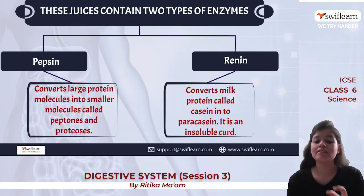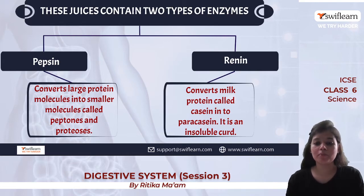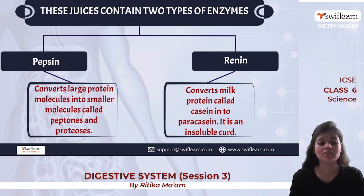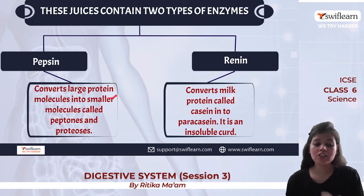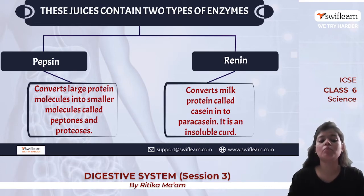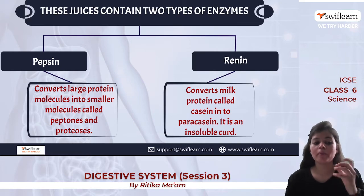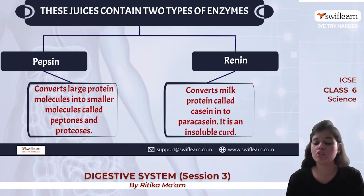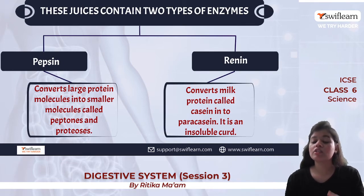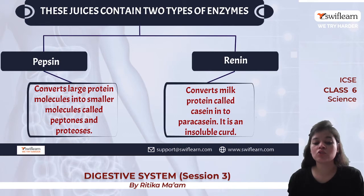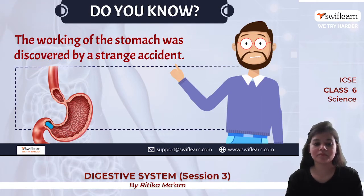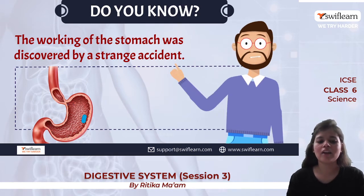The digestive juices contain mainly two types of enzymes: pepsin and renin. Pepsin converts large protein molecules into smaller molecules known as peptones and proteoses. Renin converts milk protein, known as casein, into para-casein, which is an insoluble curd.